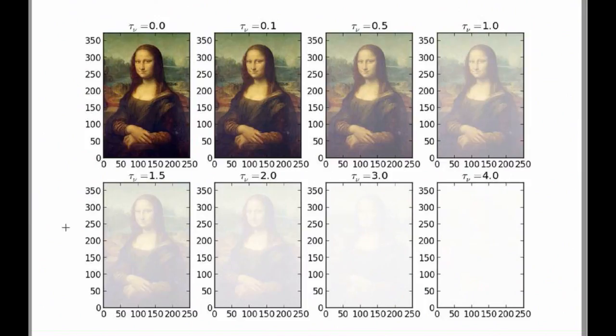So up here we're in the regime of optically thick, down here we're in the regime of optically thin. And if you can get a feel for it, this is what an optical depth of unity looks like.